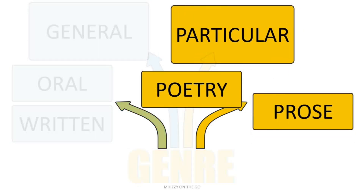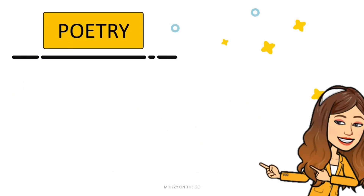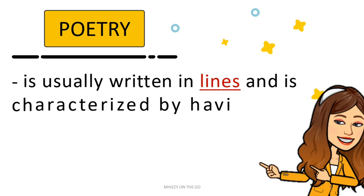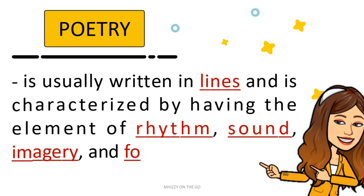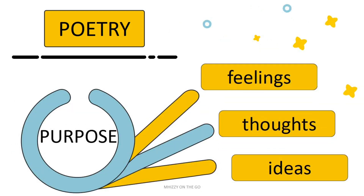Poetry and prose are also known as the two major forms of literature. Poetry is usually written in lines and is characterized by having the elements of rhythm, sound, imagery, and form. The main purpose of poetry is to express feelings, thoughts, and ideas.